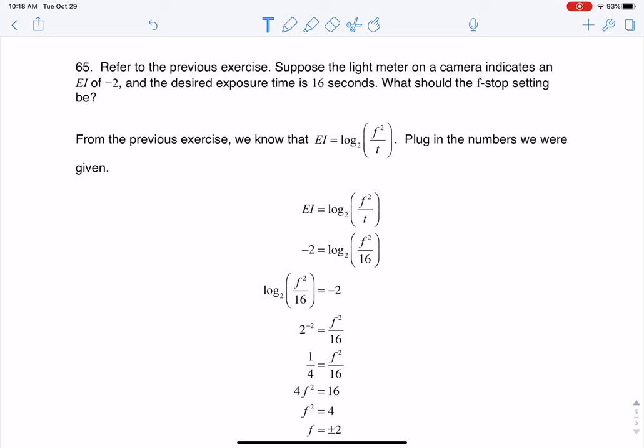Hey, Matt 31. I had a question coming out of section 6.3, number 65. We were given this equation, or we could have picked this equation up from the previous exercise. We're told that the light meter on a camera indicates an EI of -2, and the desired exposure time is 16 seconds. What should the f-stop be?